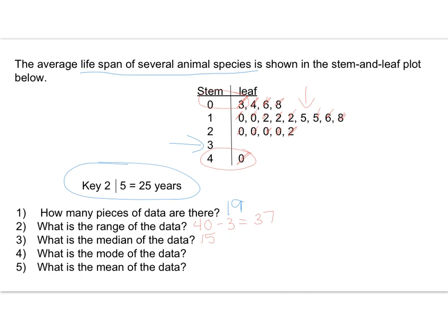The mode is what happens most often. If you look here, there are 4 leaves that belong to the stem of 2. So my mode, the number that happened most often, was 20.